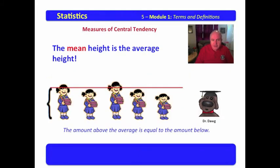We come up with this average value over on the left. We draw a line across, and we notice that two of these Girl Scouts are taller than the average, and three of them are less than the average. The amount above the average is equal to the amount below the average.